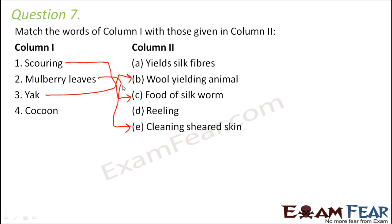Yak is a wool-yielding animal — yes, of course it produces wool. Cocoon is the structure formed by the protein secreted by silkworms. When this cocoon hardens in the presence of air, it gives us silk fibers. With this we have reached the end of this lesson on fibers and fabrics.